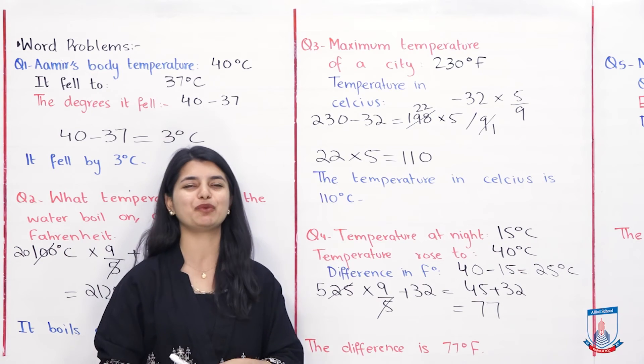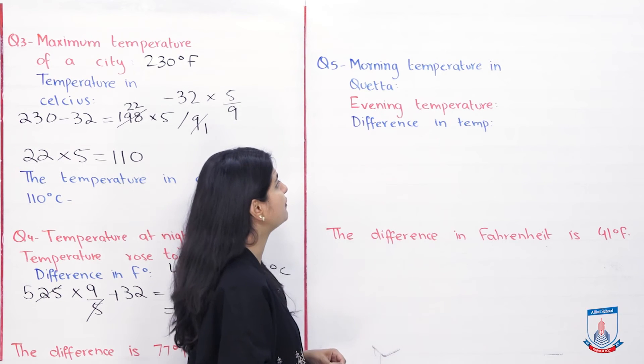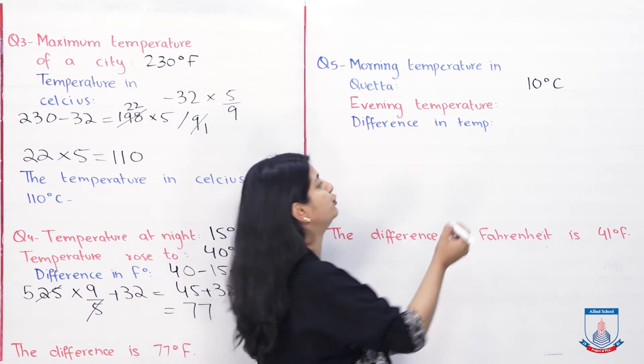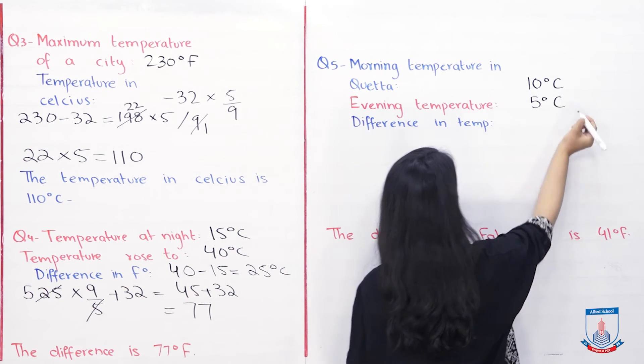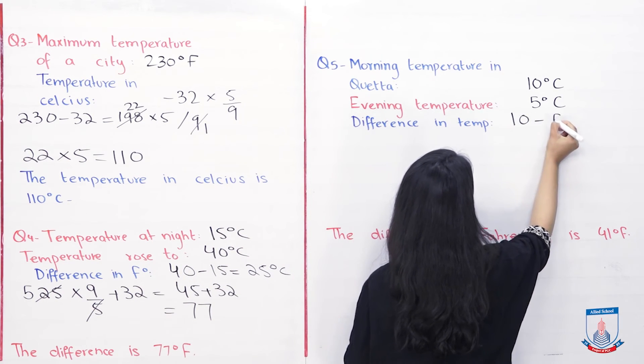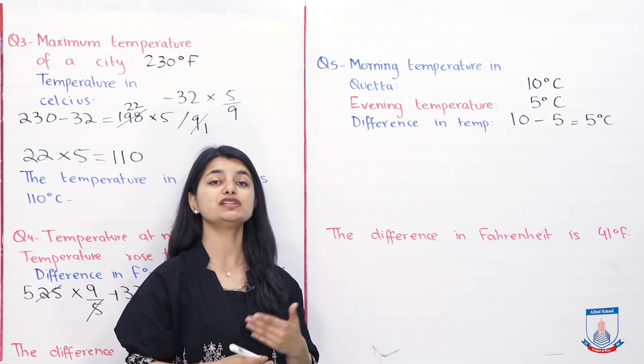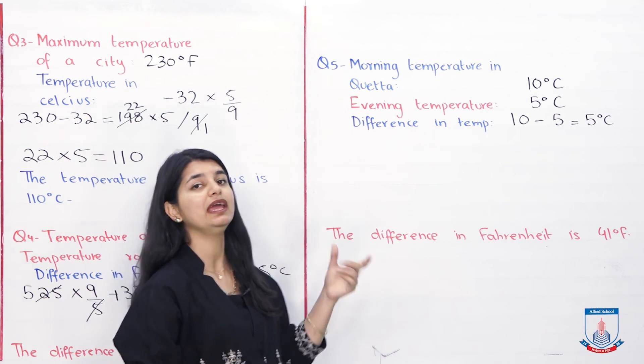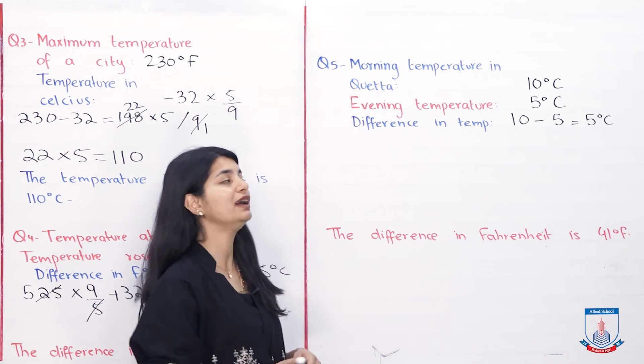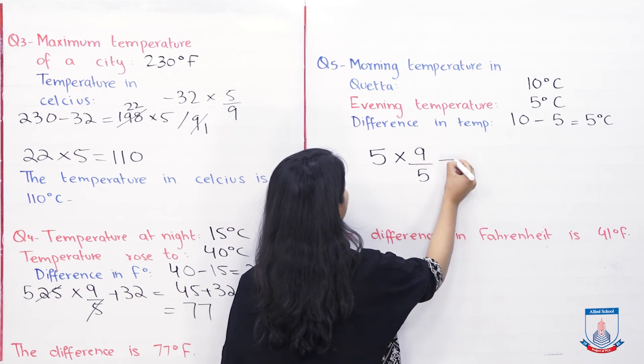Now let's see the last question. Question number 5 is morning temperature is 10 degree Celsius. Evening this temperature will fall to 5 degree Celsius. You have to calculate the difference. You can do it by Celsius, 10 to 5. So that means that it is 5 degrees Celsius.